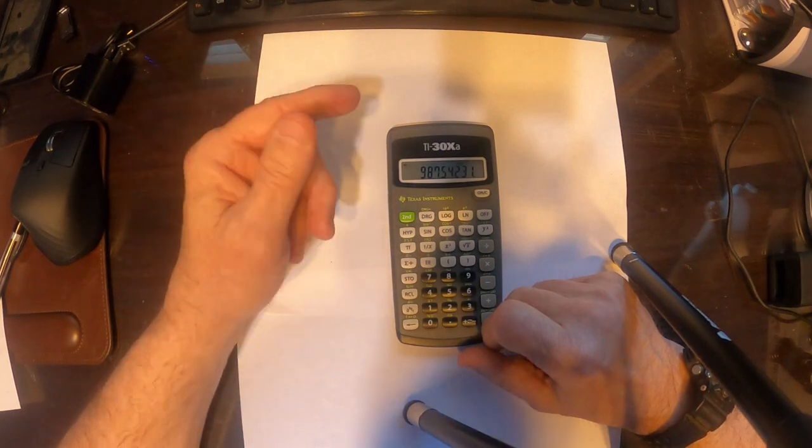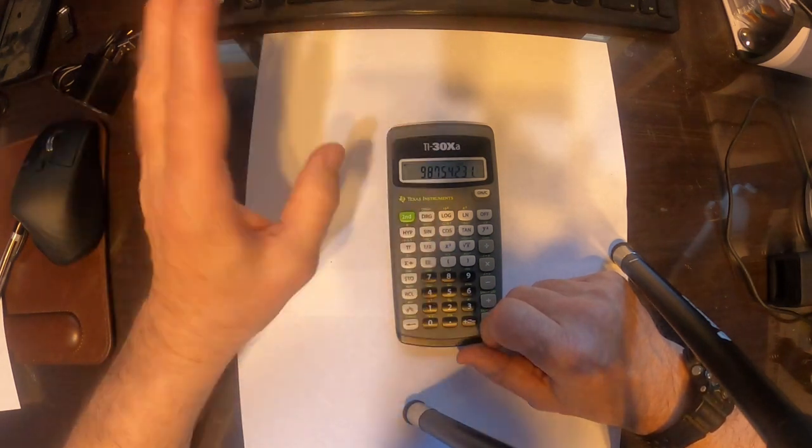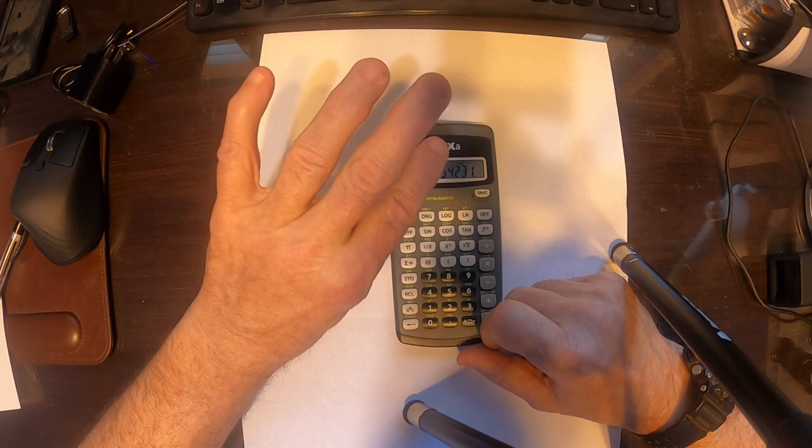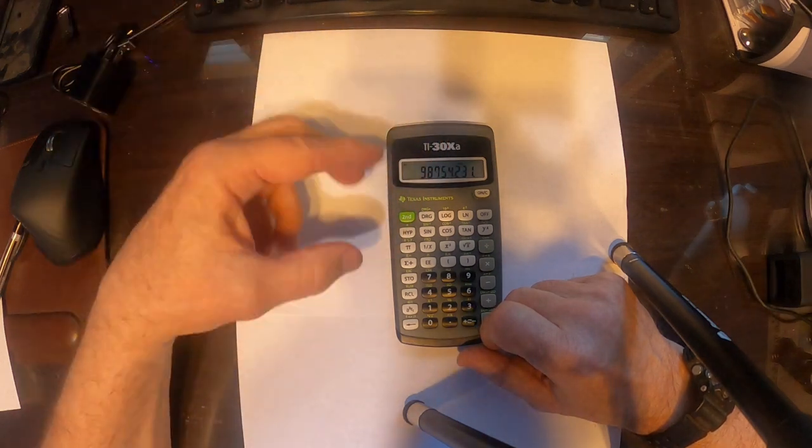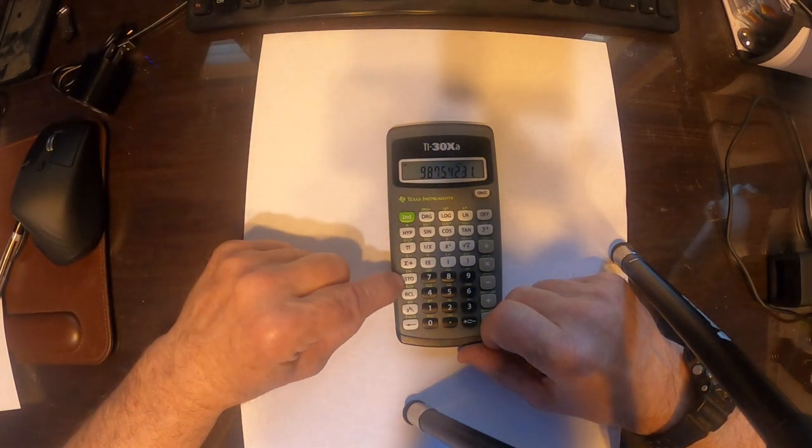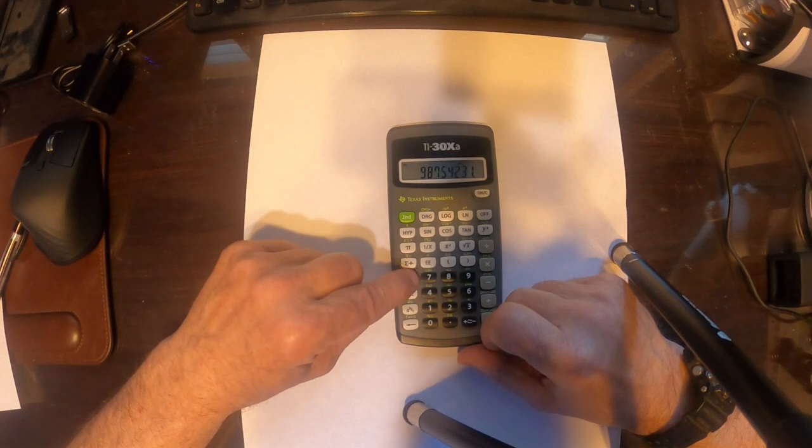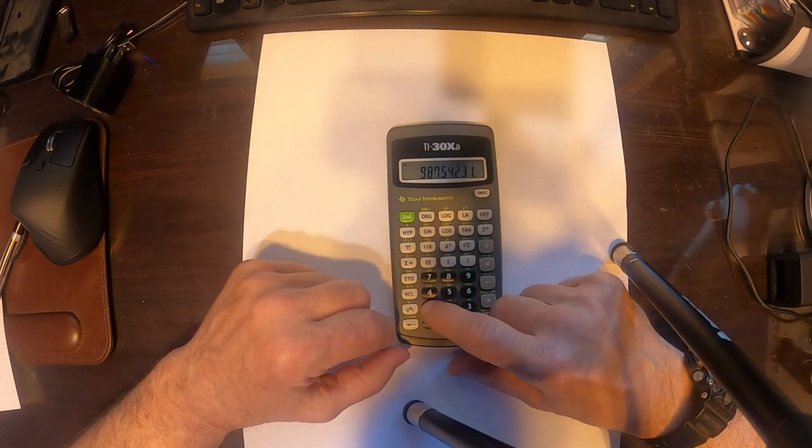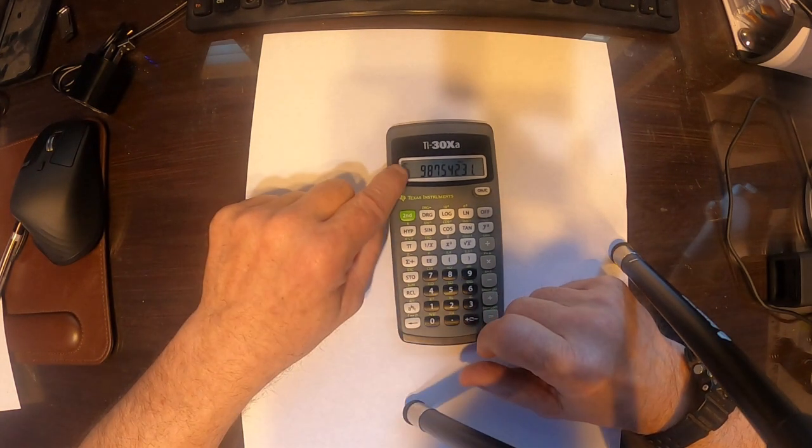Another thing that's really useful is its memory. Let's say we're doing a calculation, and we get this number, and we want to store it so that we can use it later in the calculation. Well, you see that STO there? It says store. Press that, and then a number like 1, 2, or 3.